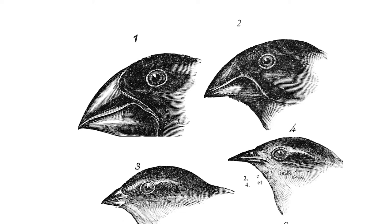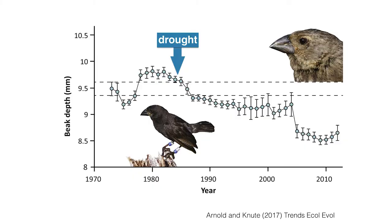Since Darwin, people have gone back to the Galapagos and studied these finches over time. They can capture them and measure, within one species of finch, the depth of the beak. The shape and size of that beak is what allows that bird to eat particular types of food, for example seeds. A larger beak would be better at crushing larger seeds; a smaller beak would be better at getting smaller seeds.